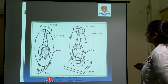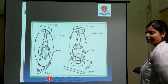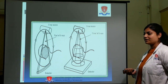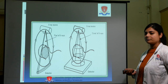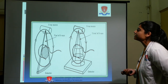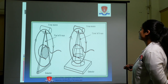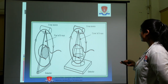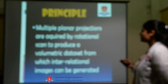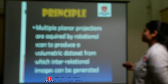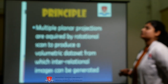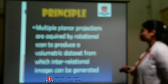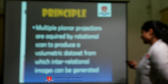In CT, images are captured only in the axial direction, and the computer forms the 3D image by stacking axial slices. CBCT, however, captures images in three directions: axial, sagittal, and coronal planes. CBCT gives multiplanar projections, acquiring images in all three directions. These multiplanar projections are acquired by a rotational scan to produce a volumetric data set from which interrelational images can be generated.